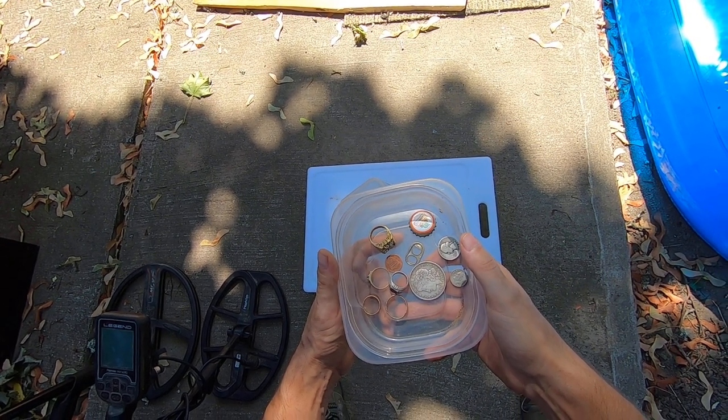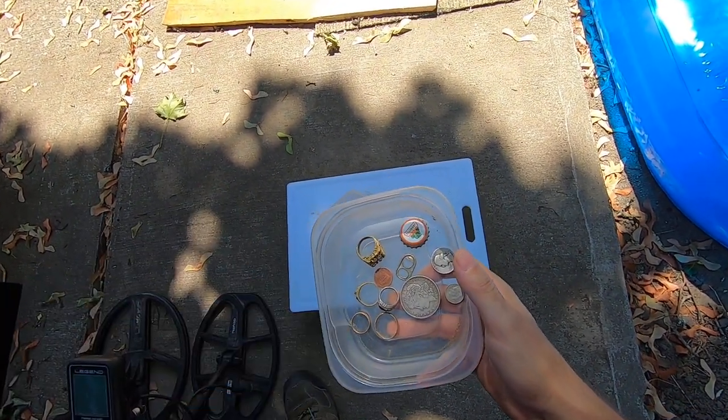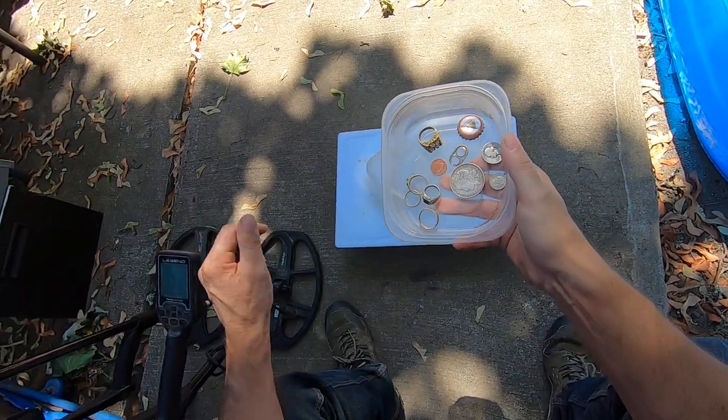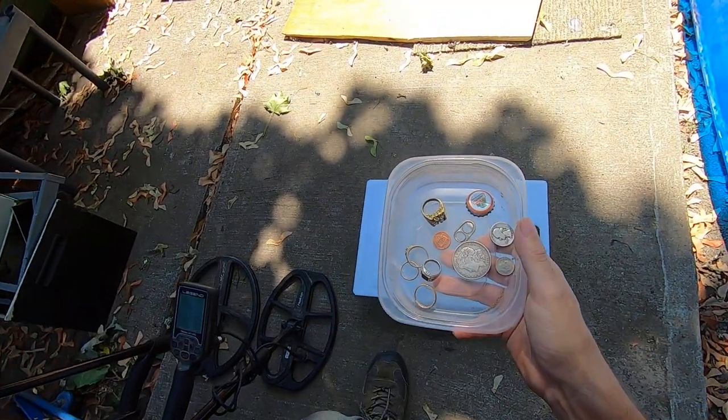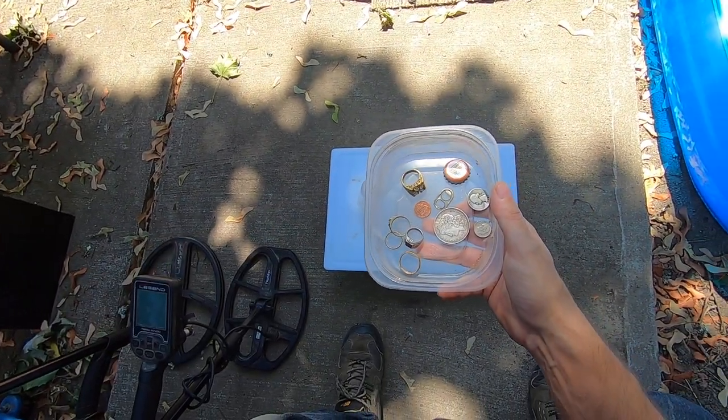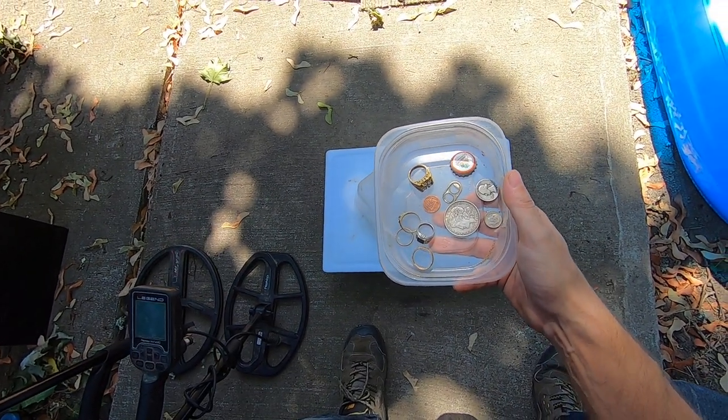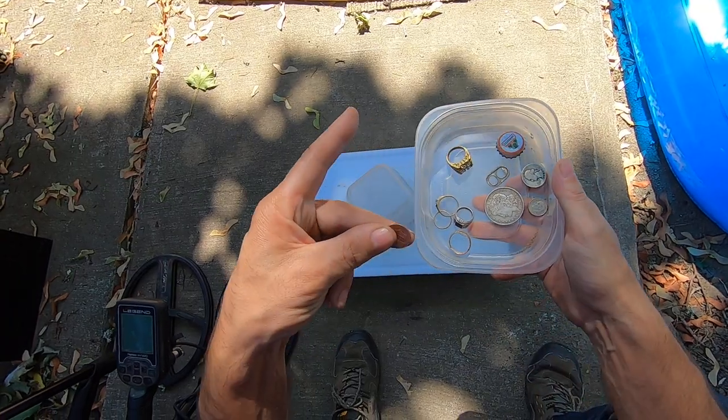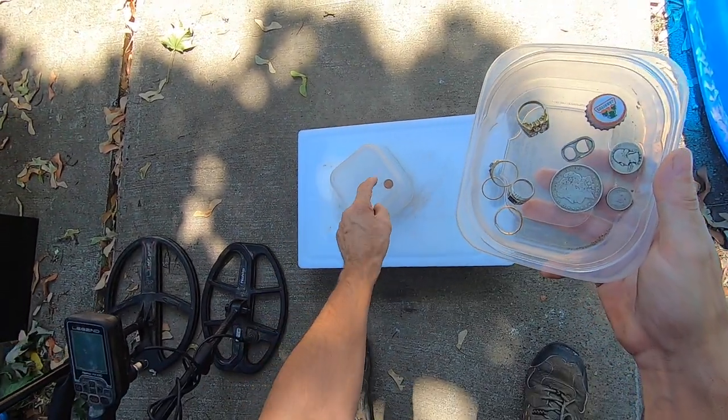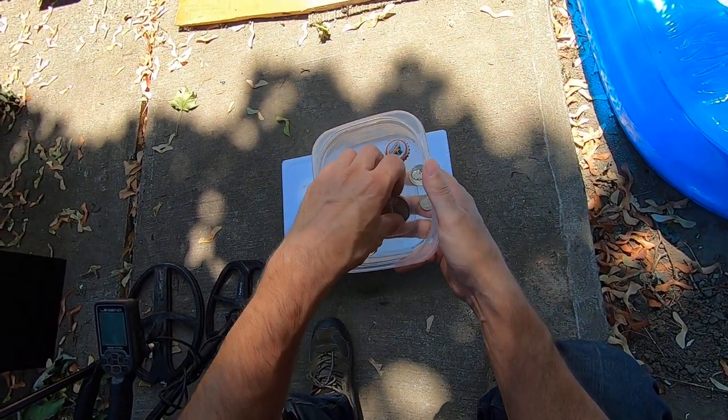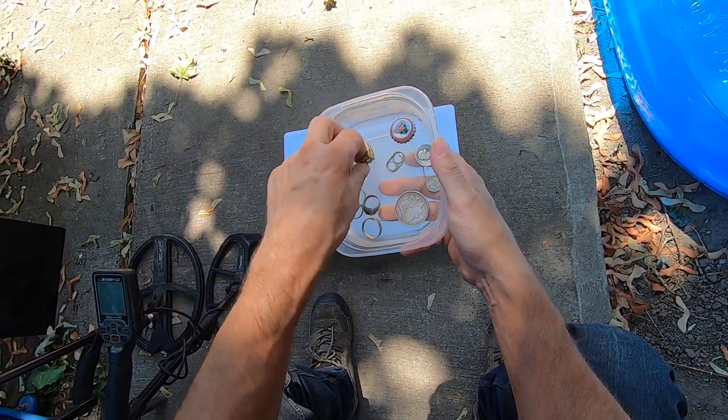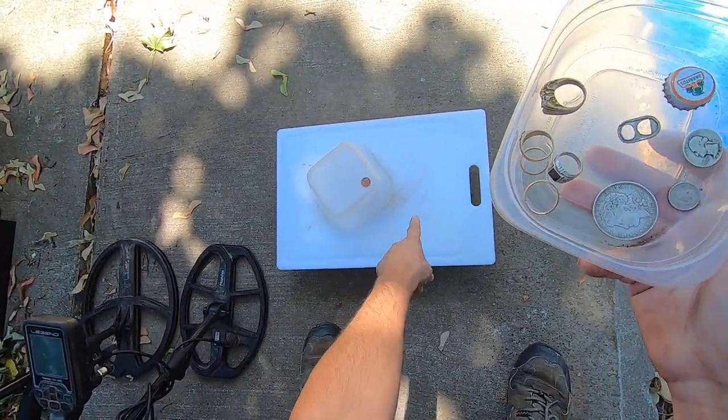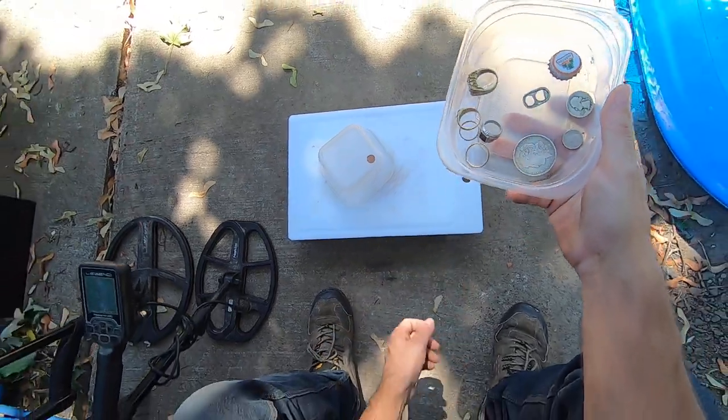I'm going to do some notching here and some masking and maybe some rejecting here with the Nokta Legend LG 30 coil here. Somebody requested me to do another test with the big coil and mask some targets. So I'm going to start out with the zinc penny. I'm going to notch the zinc penny out and see how it affects these other coins and rings underneath that zinc penny or near that zinc penny.